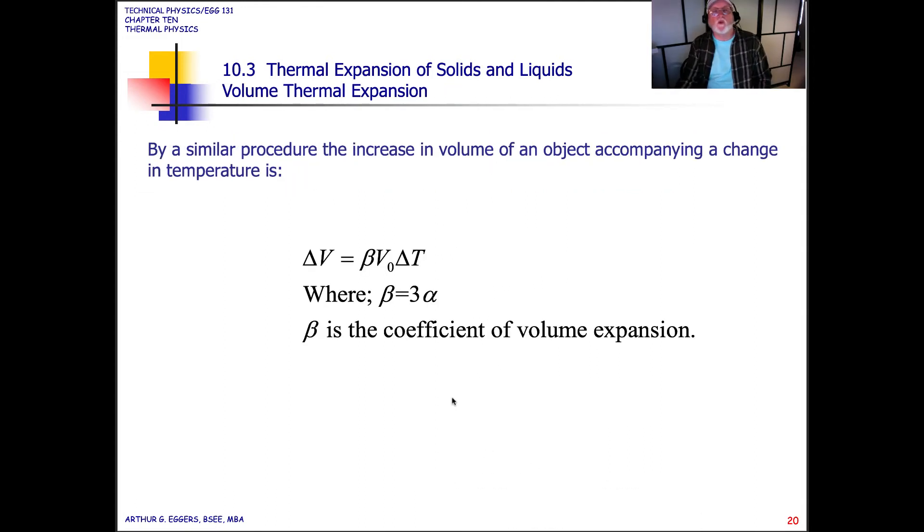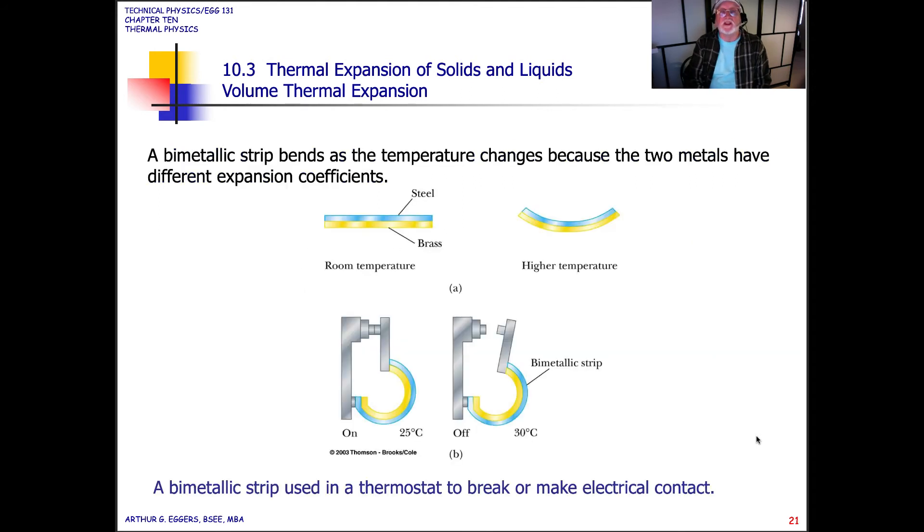So what we do, then, similarly, is we run through the same mathematics to come up with a change in volume. We call it beta times V-naught delta T for the volume, where beta is three times alpha. So beta is the coefficient of volume expansion.